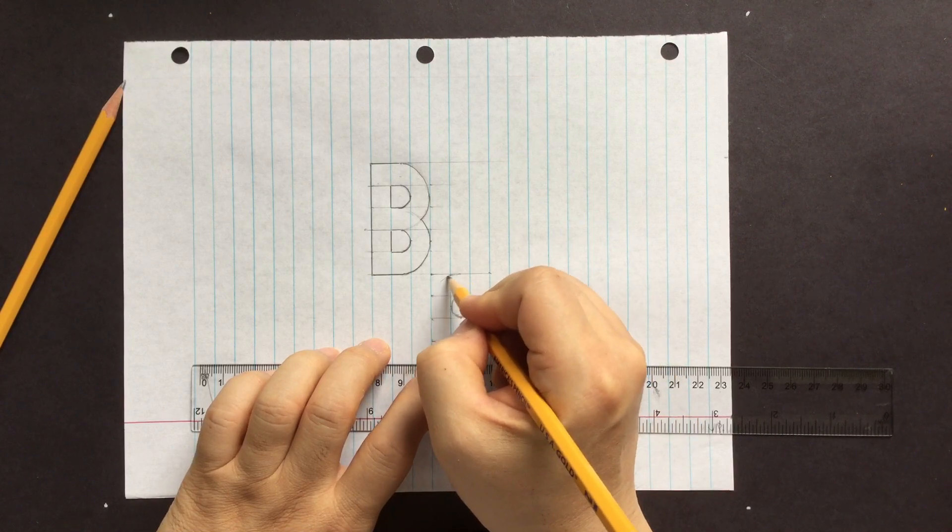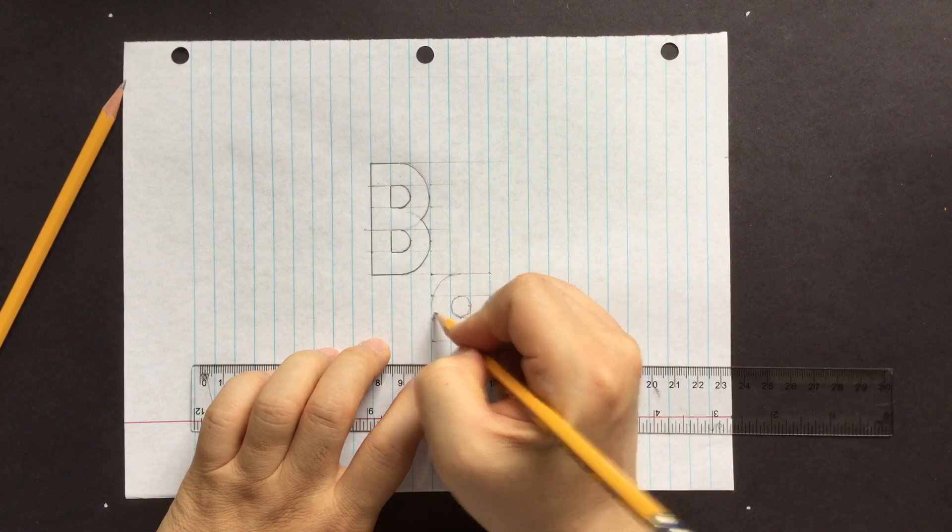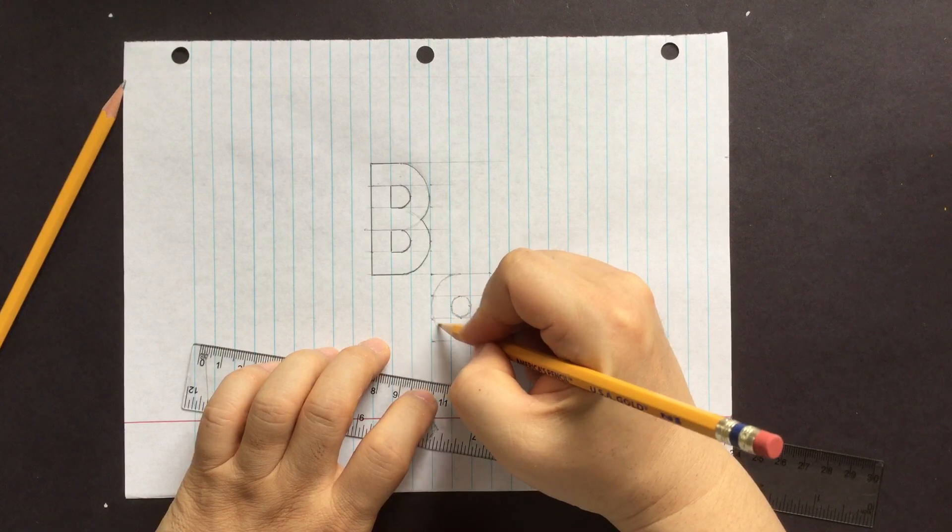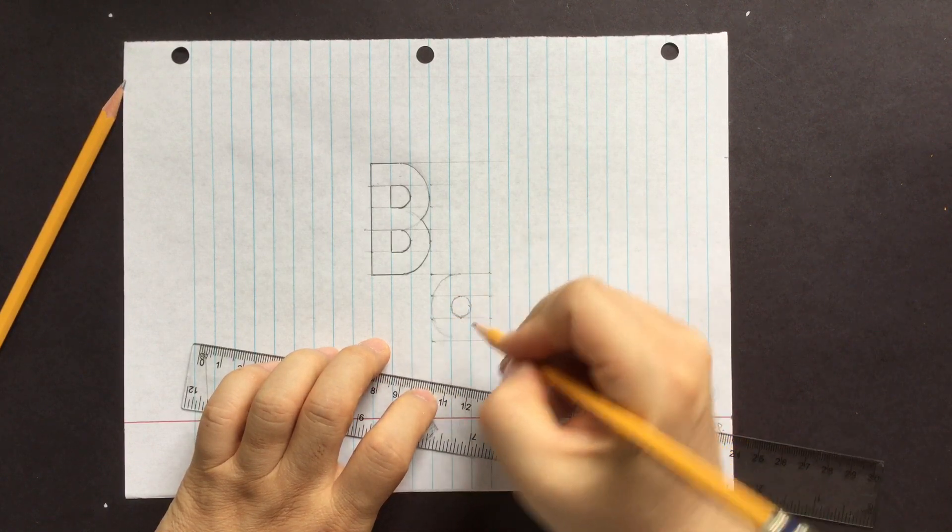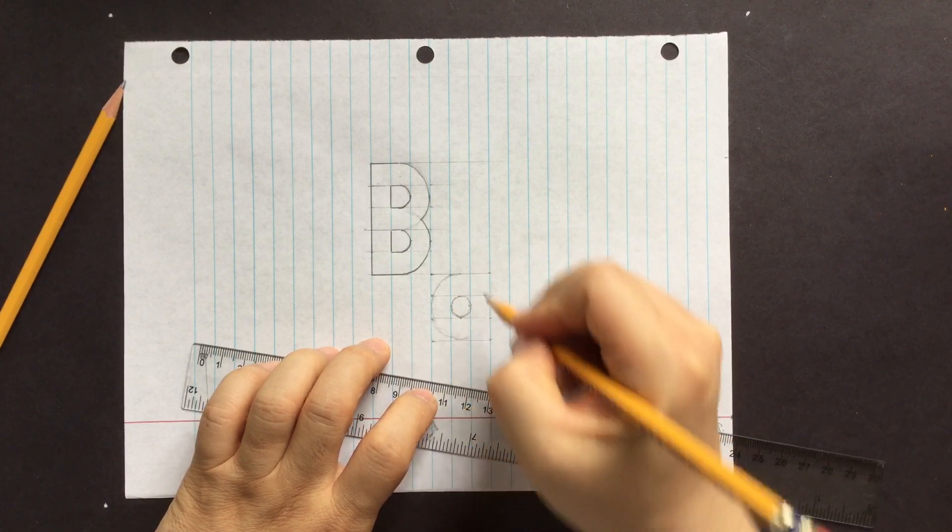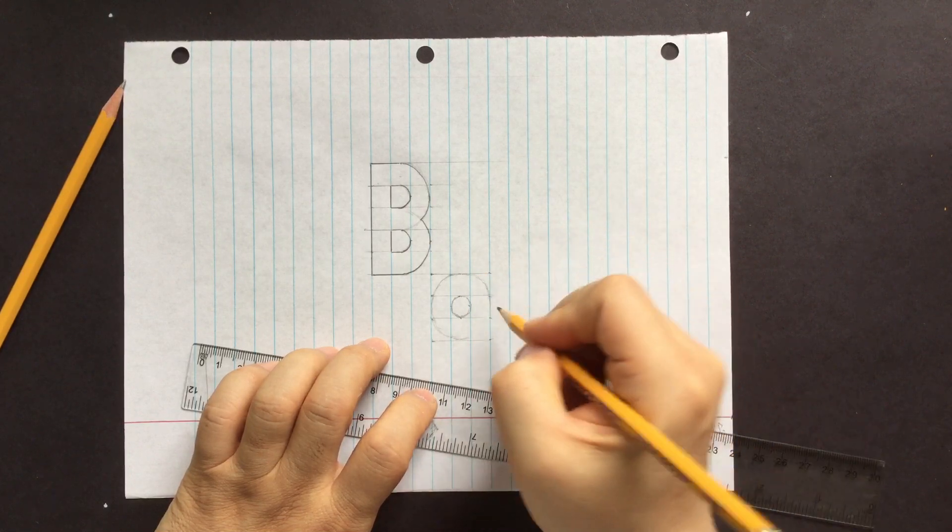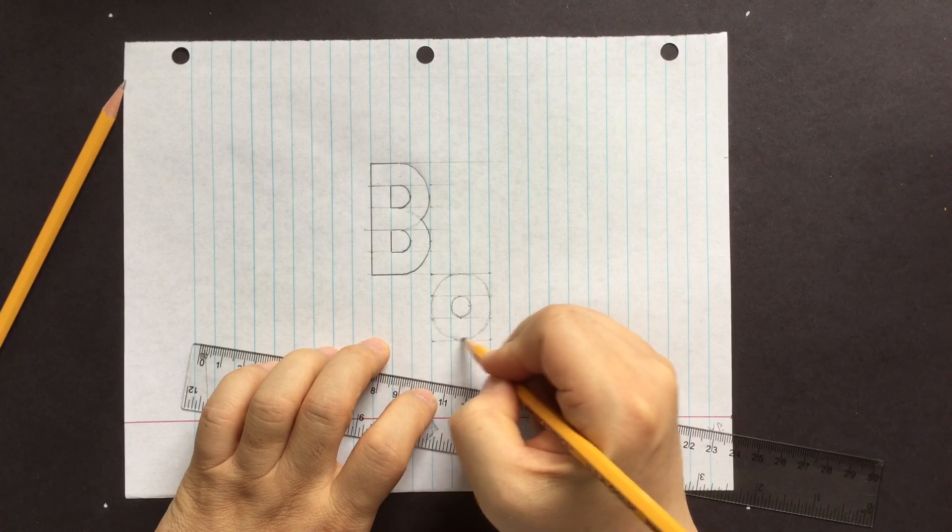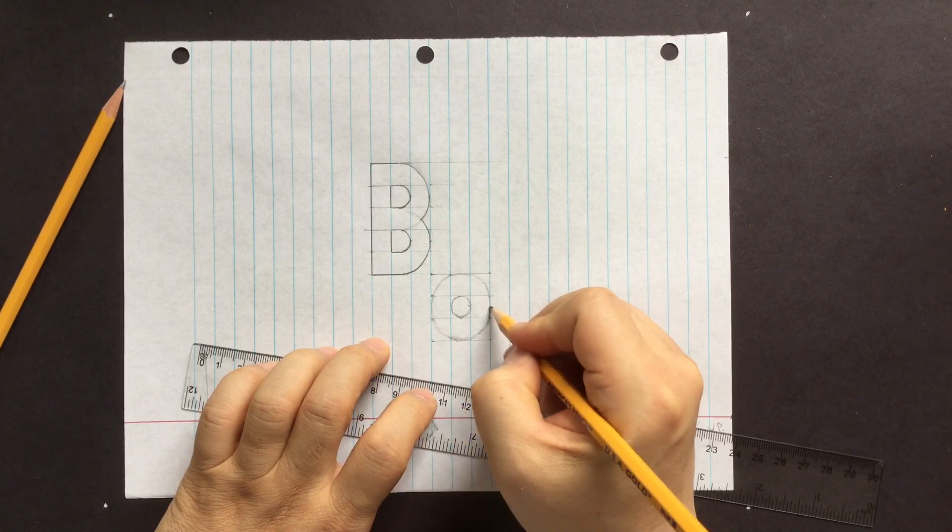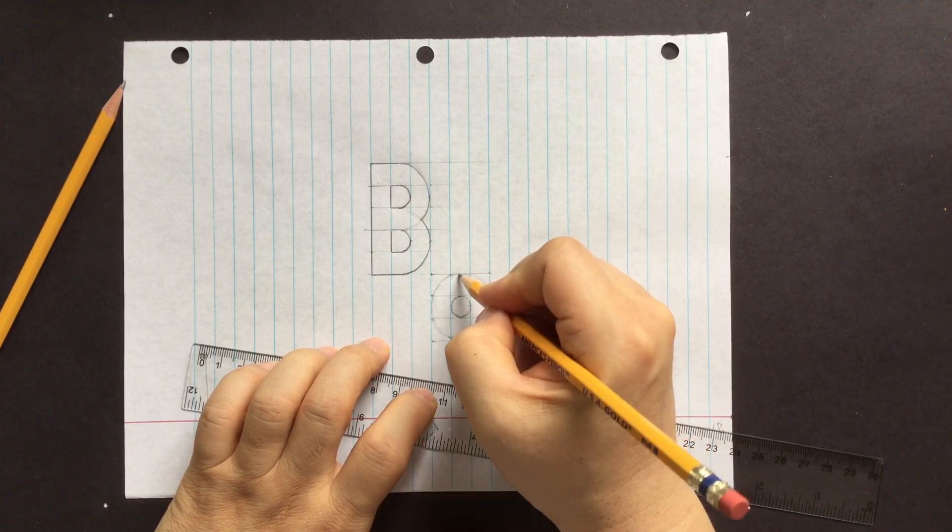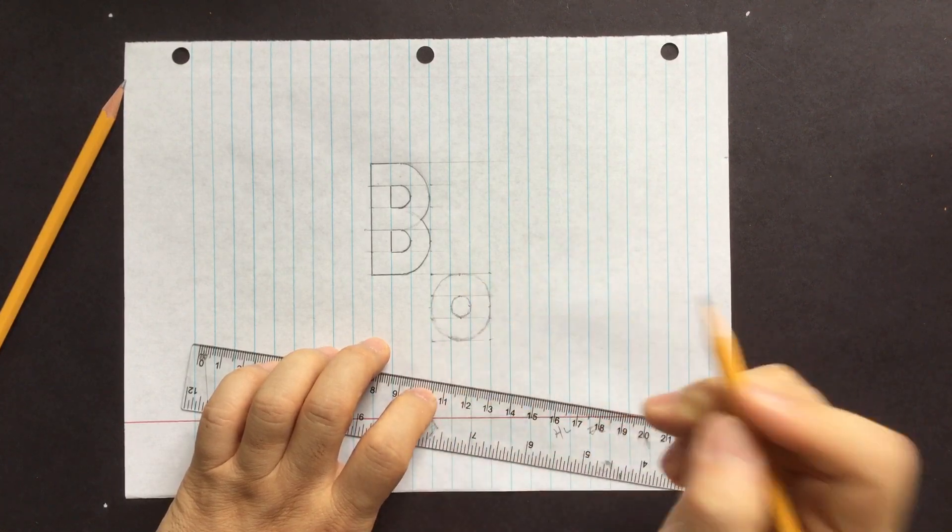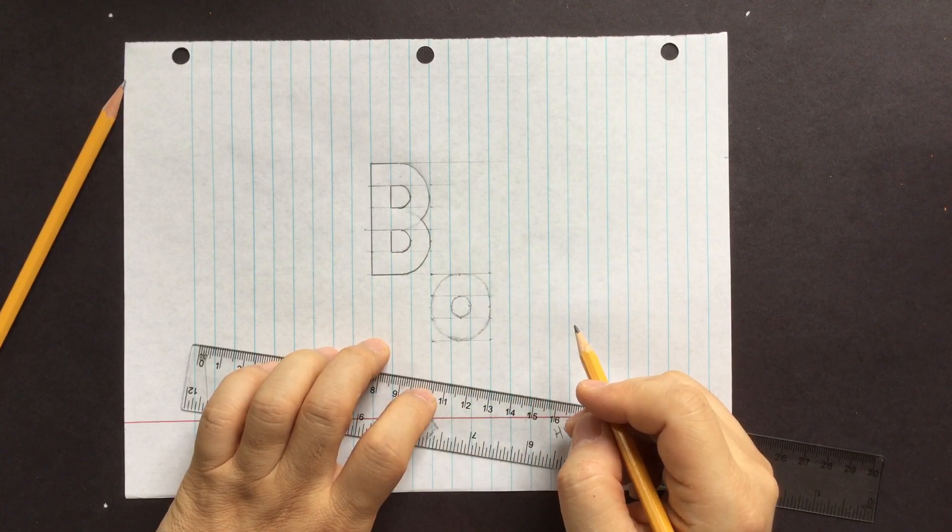So this is not a complete perfect circle because the measurement of the wideness, it's not exactly one centimeter we use. Okay, so basically middle, middle, middle, middle, and you are connecting them.